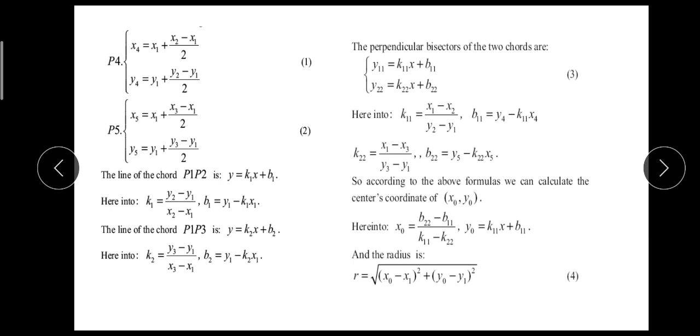After getting k22, b22 and k11, b11, we can easily find the coordinates of the center of the circle (x0, y0). Here we just have to put the values of b and k. So after getting the values of x0 and y0, we can find the radius of the circle very easily. The radius equals sqrt[(x0 - x1)² + (y0 - y1)²].